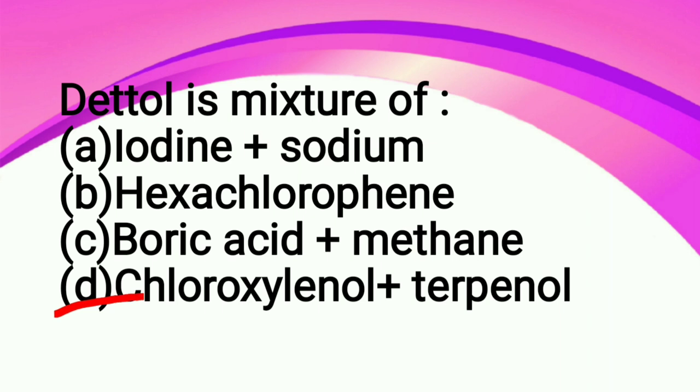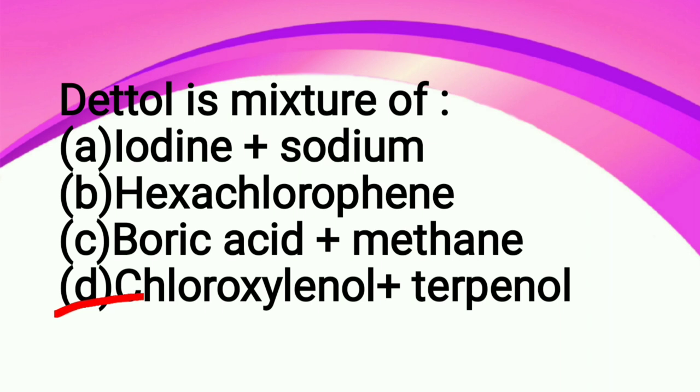The drug which is effective in curing malaria is: option A aspirin, option B quinine, option C dalnergine, option D... the correct answer is option B quinine. During corona time also, hydroxychloroquine became very famous. It is an anti-malarial drug.